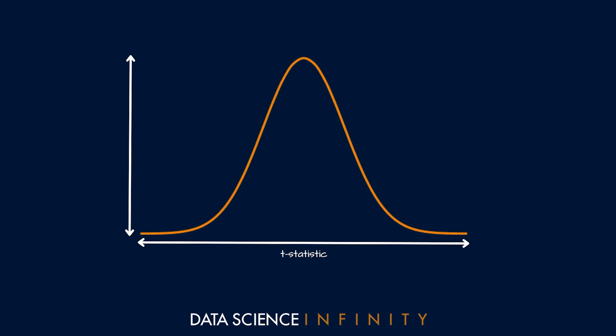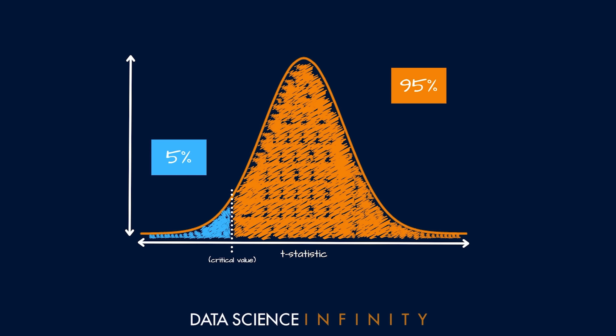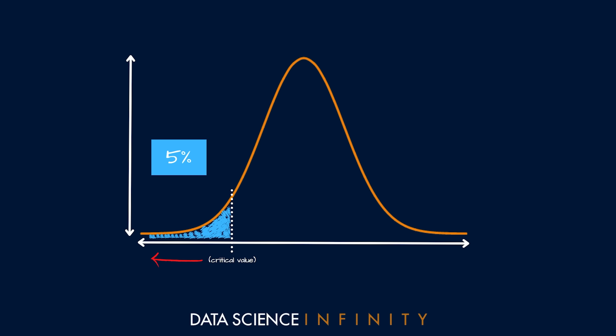Since we're interested in whether our team's mean vertical leap is lower than our rival's, we are running a one-tailed test, concerned with the left-hand side of the distribution. The critical value splits the area under the distribution curve by our acceptance criteria — with 0.05, this gives 5% on one side and 95% on the other. If we get a t-statistic less than the critical value, we reject the null hypothesis and become more comfortable with the alternate hypothesis that there is a significant difference.